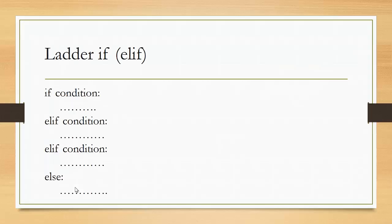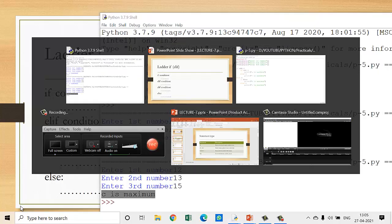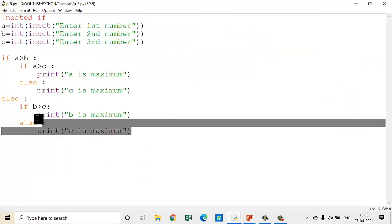Now the last one is ladder if-else, also considered as elif in Python. The syntax for this is: first the if keyword, then give a condition, then colon, write down some code. Then elif, write down the condition, colon, some code. Here you can write N number of elif statements. Now let us go to programming — the same program will be done with ladder if-else also.